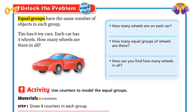Equal groups have the same number of objects in each group. In this problem, Tim has six toy cars and each car has four wheels. How many wheels are there in all? First, how many wheels are on each car? In each car there are four wheels.